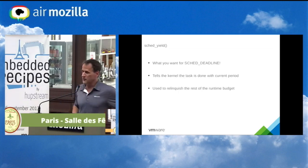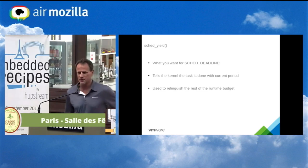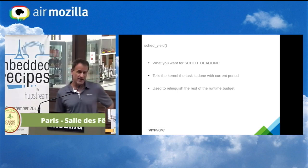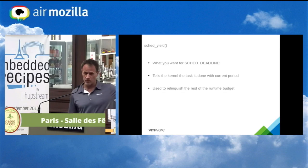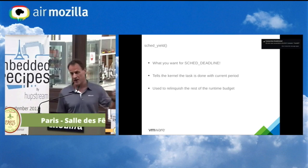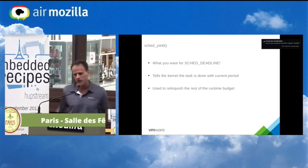The funny part is we're bringing SCHED_YIELD back into a useful case. SCHED_YIELD is now the way to tell the kernel that if you're a SCHED_DEADLINE task, you're done with your computational time for this period — let me go and wake me up at the next period. So SCHED_YIELD actually is functional when doing SCHED_DEADLINE. It actually isn't buggy code, so yes, you can use SCHED_YIELD again if you're using SCHED_DEADLINE.